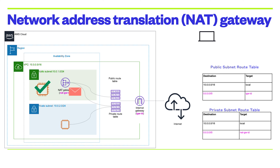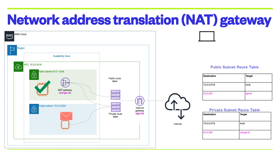But what if an end user wants to communicate directly with your instances in the private subnets? It will not be allowed. But the instances in the private subnets might need to do software updates or download security patches. To enable those resources to access the Internet, you can add a component called NAT Gateway to your VPC.